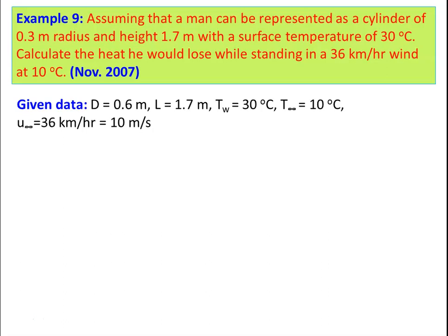Example 9: Assume that a man can be represented as a cylinder of 0.3 m radius and height of 1.7 m with a surface temperature of 30°C. Calculate the heat he would lose while standing in a 36 km/h wind at 10°C. Diameter = 0.6 m, height = 1.7 m, Tw = 30°C, T∞ = 10°C, velocity = 36 km/h = 10 m/s.